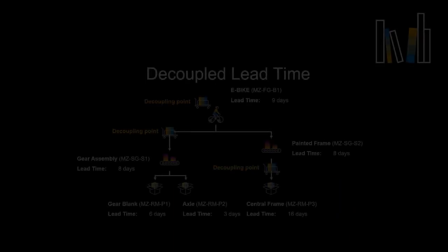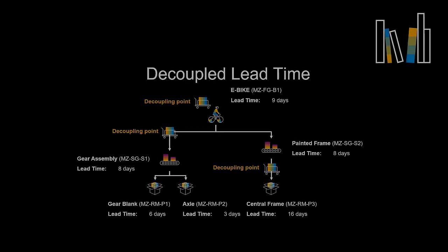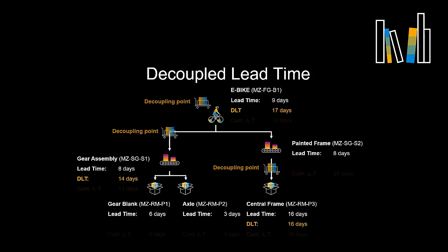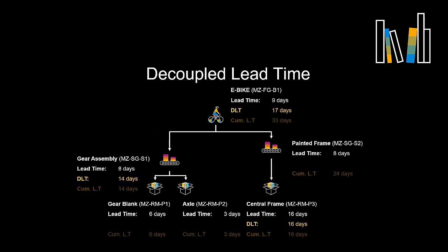Decoupled lead time is specific to DDMRP. It is constructed to absorb variability and compress lead times. This is done by calculating an intermediate lead time in the DDMRP setup, which is the DLT or decoupled lead time. Traditional MRP calculation uses what is known as the cumulative lead time, which is manufacturing lead time plus the longest procurement lead time.